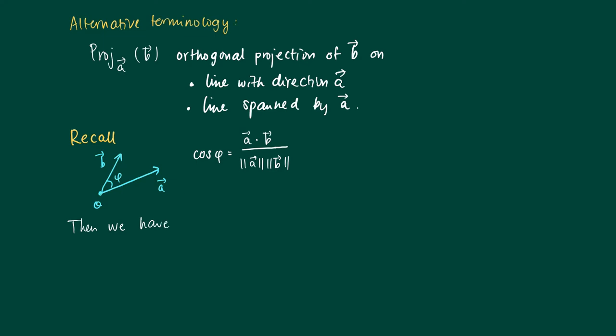So we're going to use this in the projection formula we obtained. The projection of B on A is defined as the dot product of B and A, which is of course A times B dot product, divided by the inner product of A with itself. It equals, now we're going to use the expression here, so this equals the length of A times the length of B times the cosine of phi, divided by the inner product of A, which is the length of A squared.